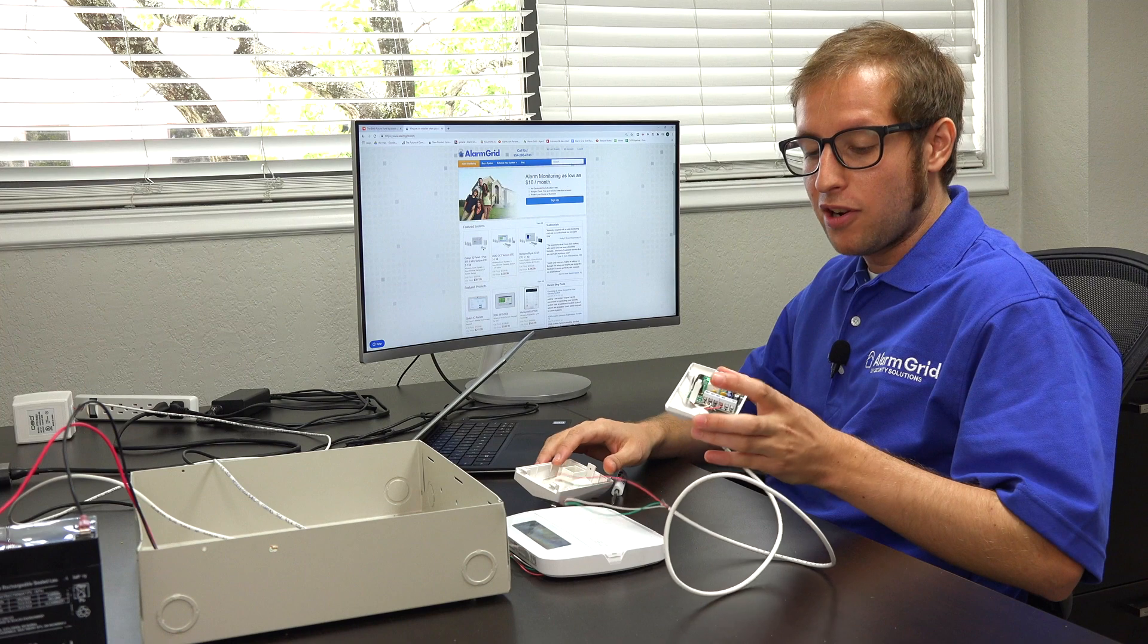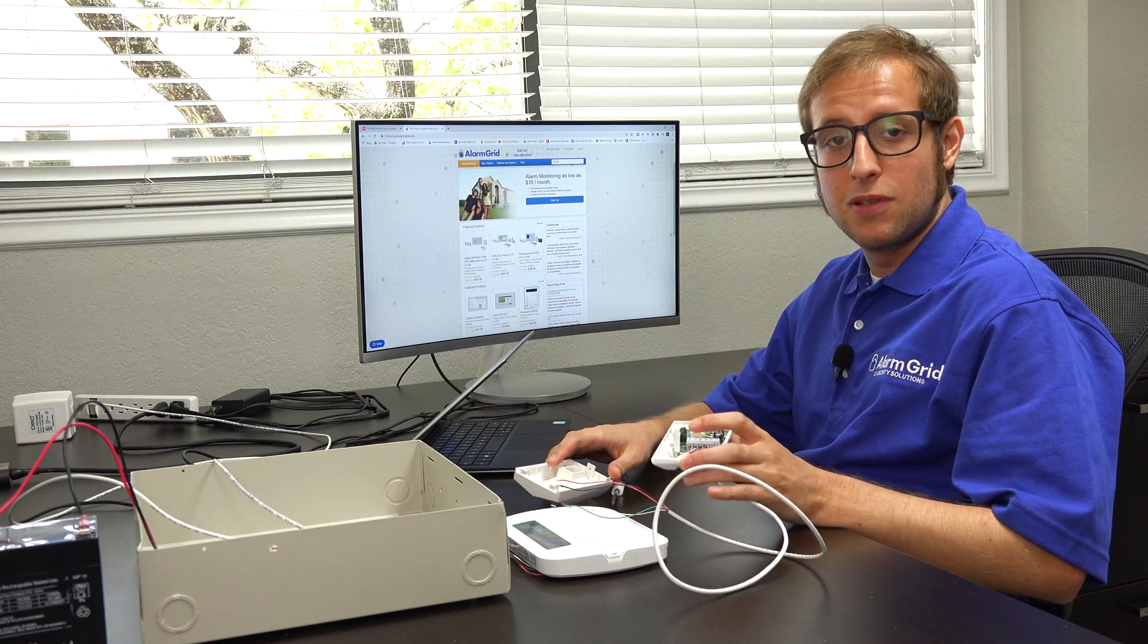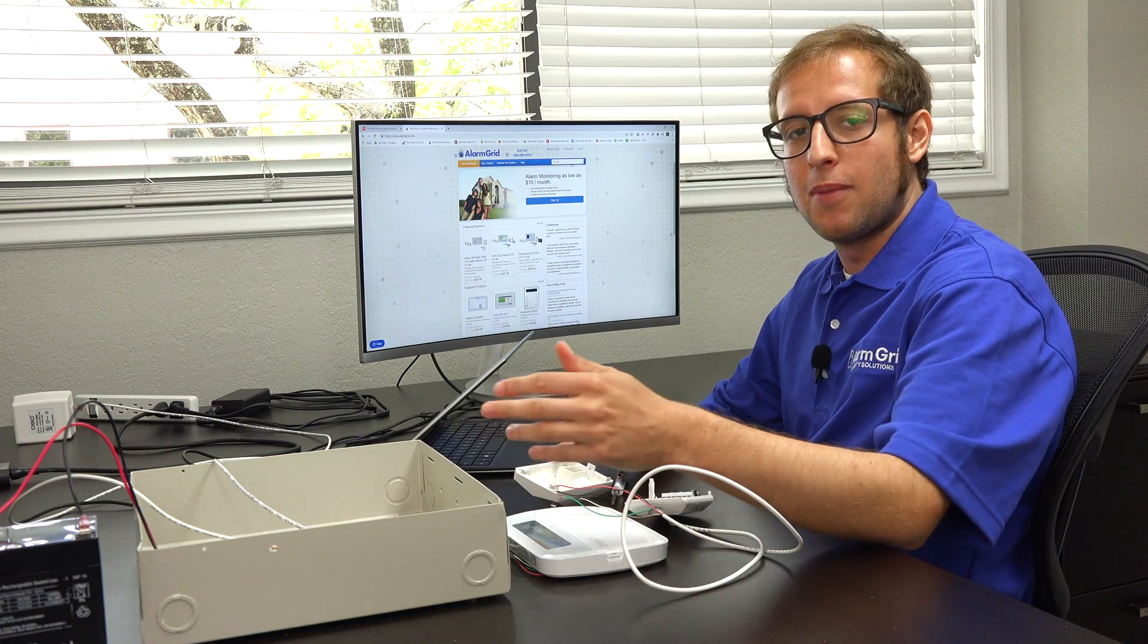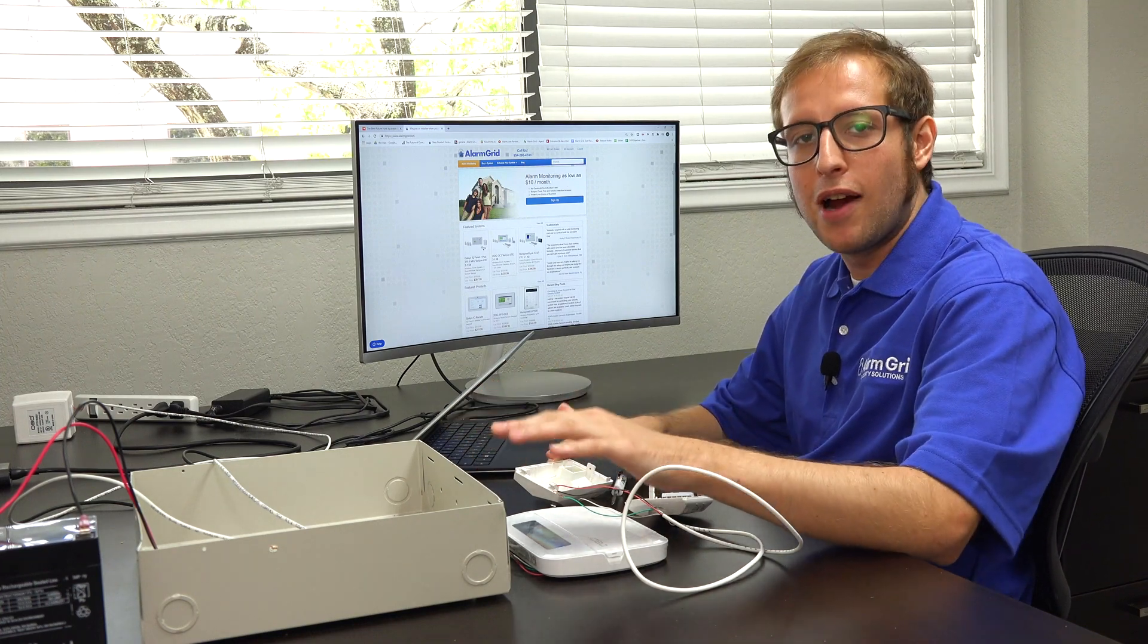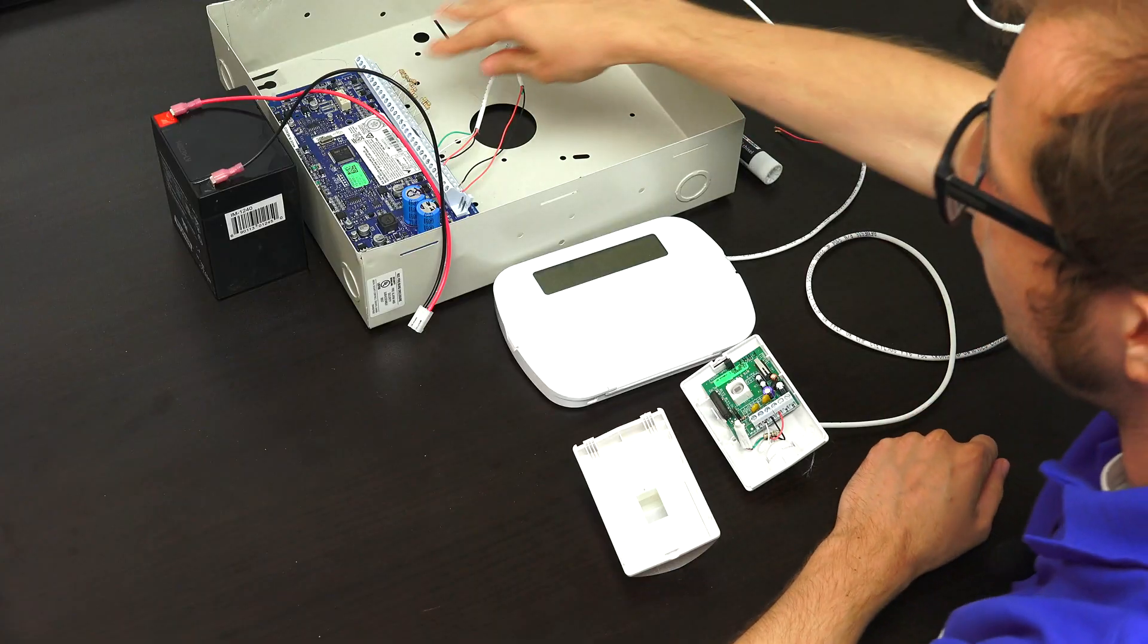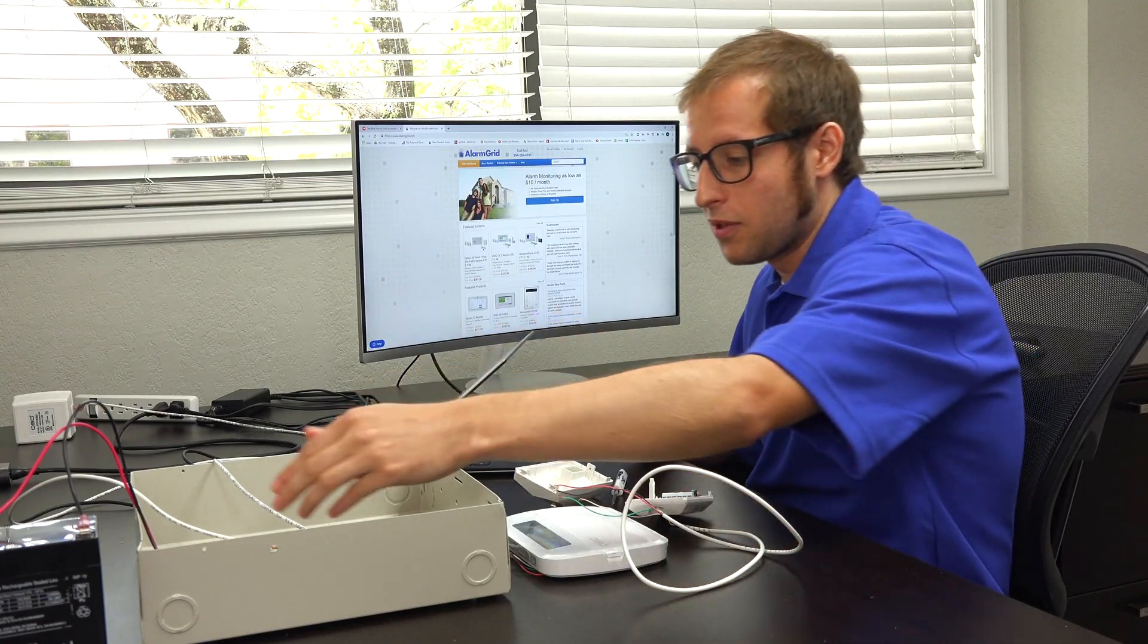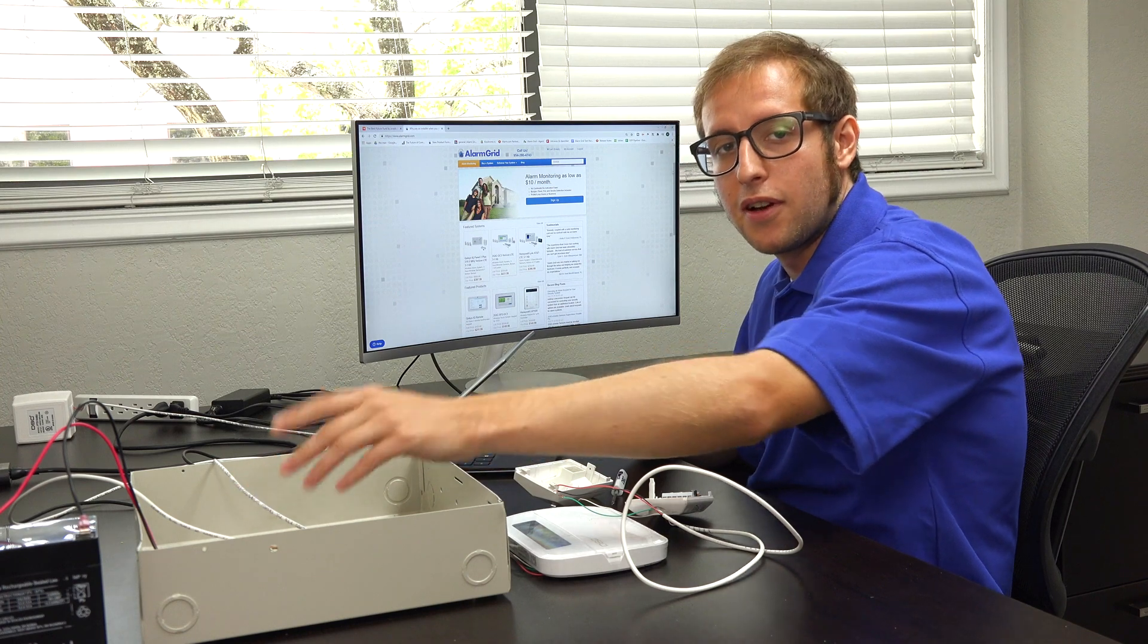We have a wired motion sensor here that we're going to be using for our demonstration purposes. But first, I want to talk a little bit about the Neo. The Neo is a hardwired system, and it has onboard zones for you to add hardwired sensors. This one has eight hardwired zones.